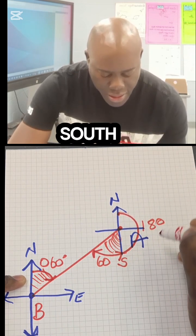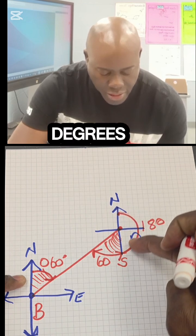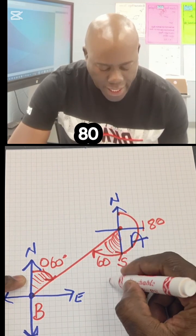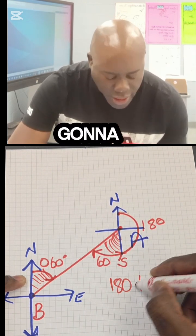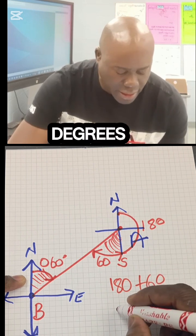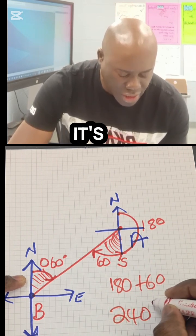But remember, from north to south, because this is south, is 180 degrees. So if we should add 180 to the 60, we're gonna get that. So the answer is 180 degrees plus the 60 degrees, and it's gonna give us 240 degrees.